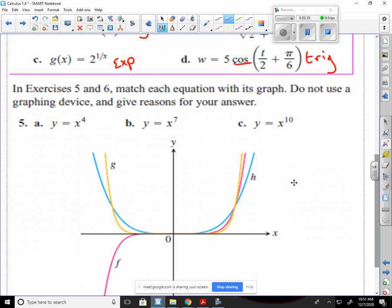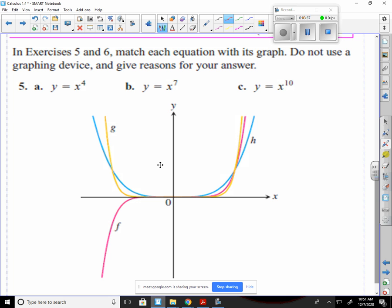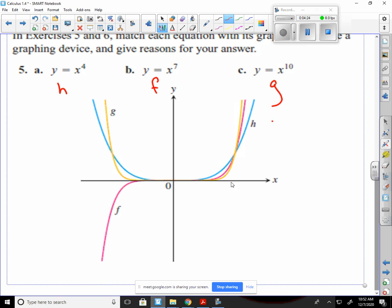In exercises 5 and 6, match each equation with its graph. If you're looking at x to the 4th, then it's going to be the one that's the most curved and the least wide. So this would be h for x to the 4th, and it would be f for x to the 7th. And you know that because it starts at the bottom and comes to the top, and it's not the u-shape. The u-shape is only going to be when it's an even exponent. So that leaves G as our last one.